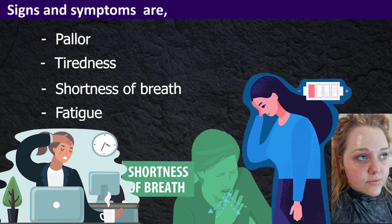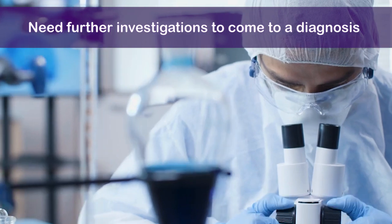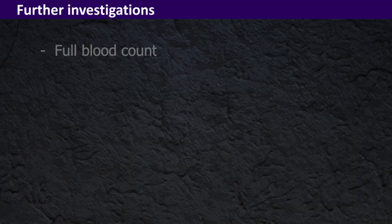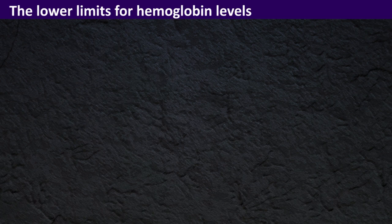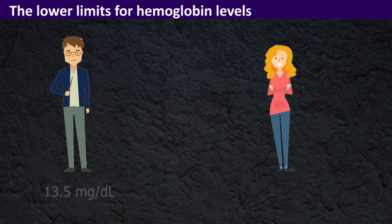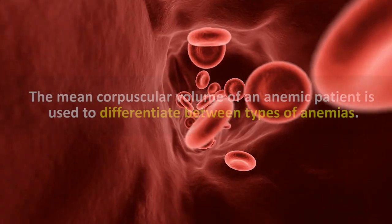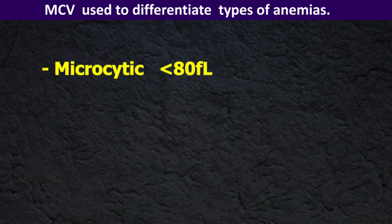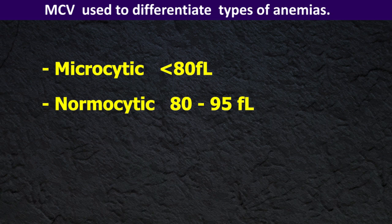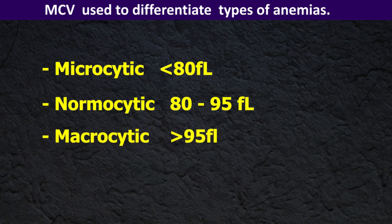These are very vague features and we need further investigation to come to a diagnosis. Full blood count, peripheral blood smear, iron studies, and sometimes even bone marrow studies may be needed depending on clinical suspicion. The lower limits of hemoglobin levels for males and females are 13.5 mg/dL and 11.5 mg/dL respectively. The mean corpuscular volume is used to differentiate types of anemias: microcytic if MCV is under 80 femtoliters, normocytic if MCV is between 80 to 95 femtoliters, and macrocytic if MCV exceeds that.